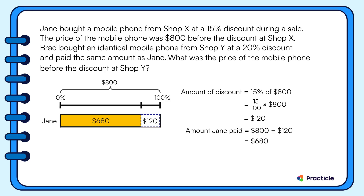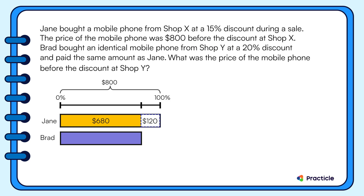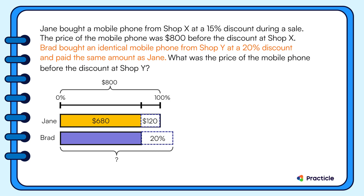But why is it important to know that? Well, that's because Brad bought the same phone from ShopY at the same price as Jane. However, he paid $680 only after a 20% discount. So how can we find the price of the phone before the discount at ShopY?